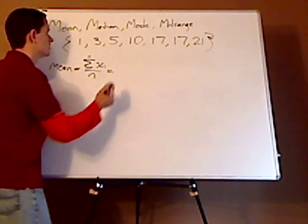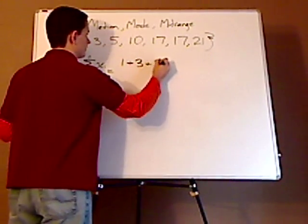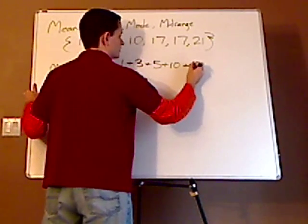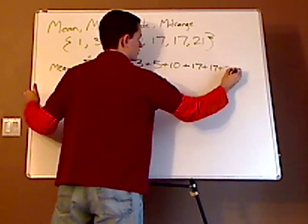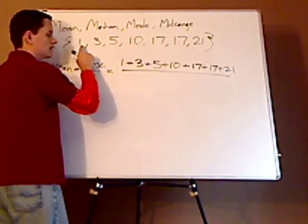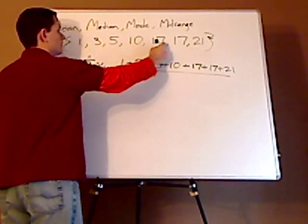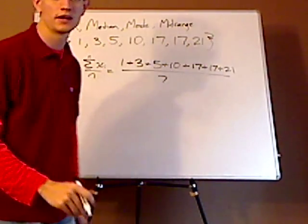Another way of saying mean is average. So you would add 1, plus 3, plus 5, plus 10, plus 17, plus another 17, plus 21, all over. And I think that's 7 items, so let me just double check. 1, 2, 3, 4, 5, 6, 7. So plug that in your calculator.